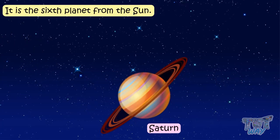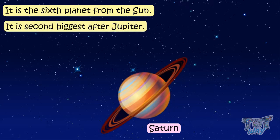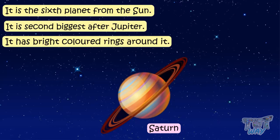Saturn. It is the sixth planet from the Sun. It is second biggest after Jupiter. It has bright colored rings around it.